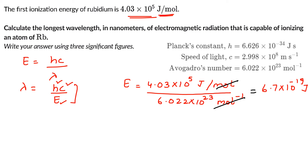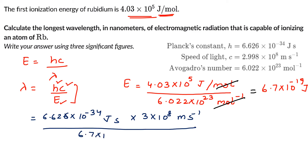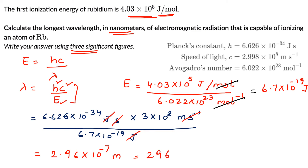Substituting into λ = hc/E: λ = (6.626 × 10⁻³⁴ J·s × 3 × 10⁸ m/s) / (6.7 × 10⁻¹⁹ J). Joules and seconds cancel, leaving meters. The answer is 2.96 × 10⁻⁷ meters. Converting to nanometers to three significant figures gives 296 nm.